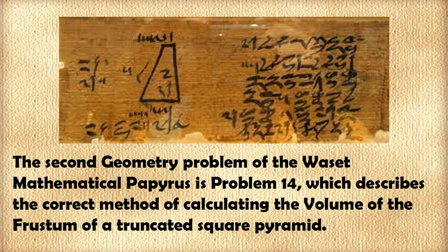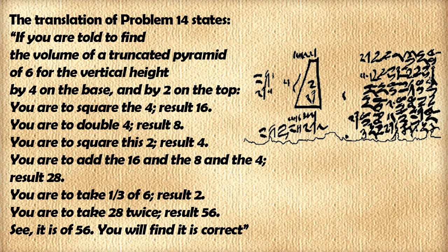The second geometry problem of the Waset mathematical papyrus is problem 14, which describes the correct method of calculating the volume of a frustum of a truncated square pyramid. The translation of problem 14 states, if you are told to find the volume of a truncated pyramid of 6 for the vertical height by 4 on the base and by 2 on the top,